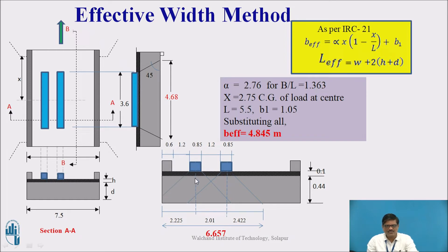Each load will have its dispersion which is shown by a blue line. This dispersion is B-effective. In the previous slide, we discussed that B-effective is given by alpha into x times 1 plus x by L plus B1. In earlier sessions, we had discussed this effective width method in detail and understood the meaning of these different terms. Alpha is a constant which depends upon the B by L ratio. For a given problem, B by L ratio comes out to be 1.363, and from the table, alpha is 2.76.